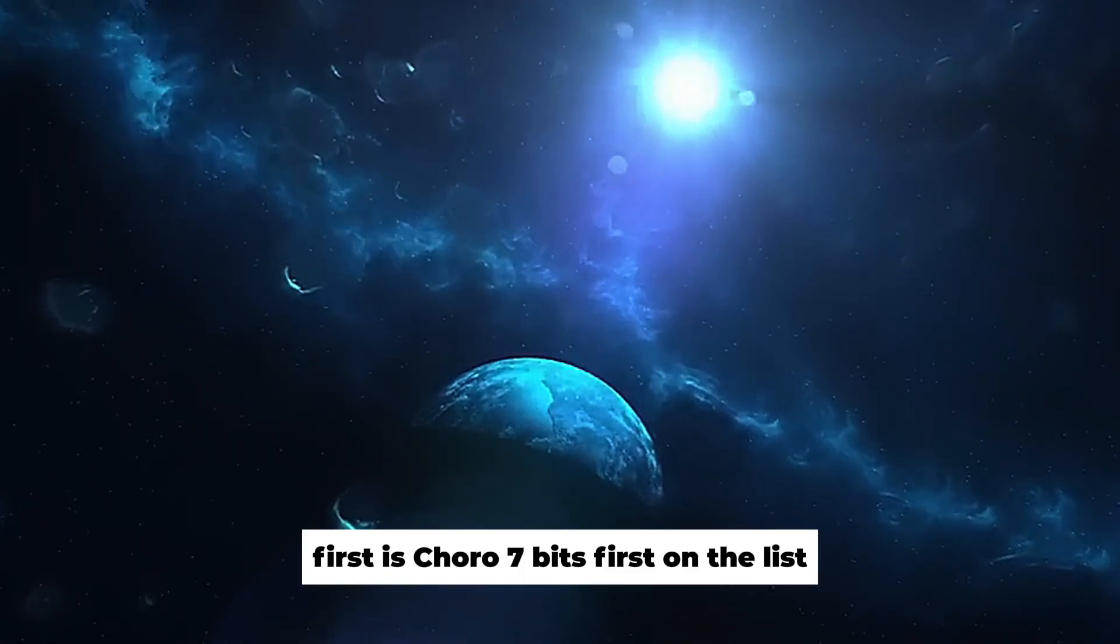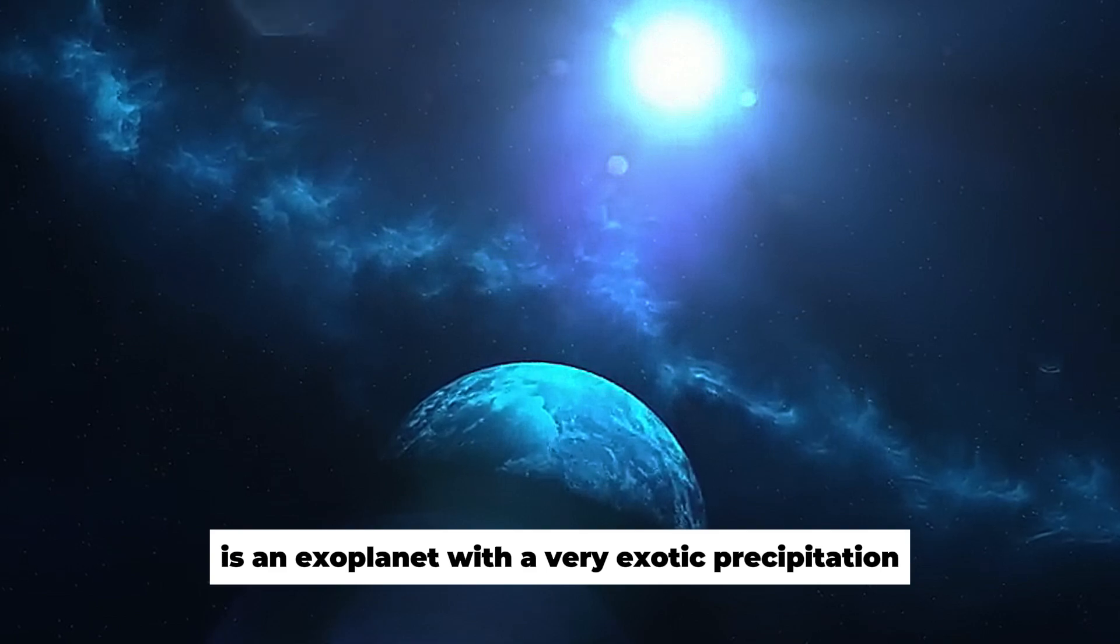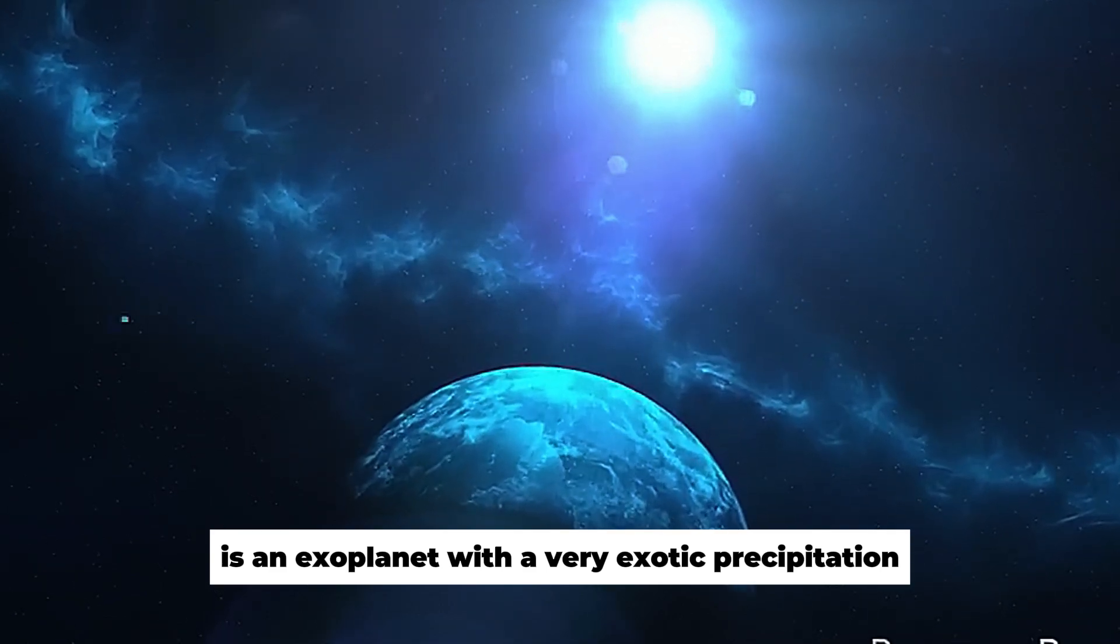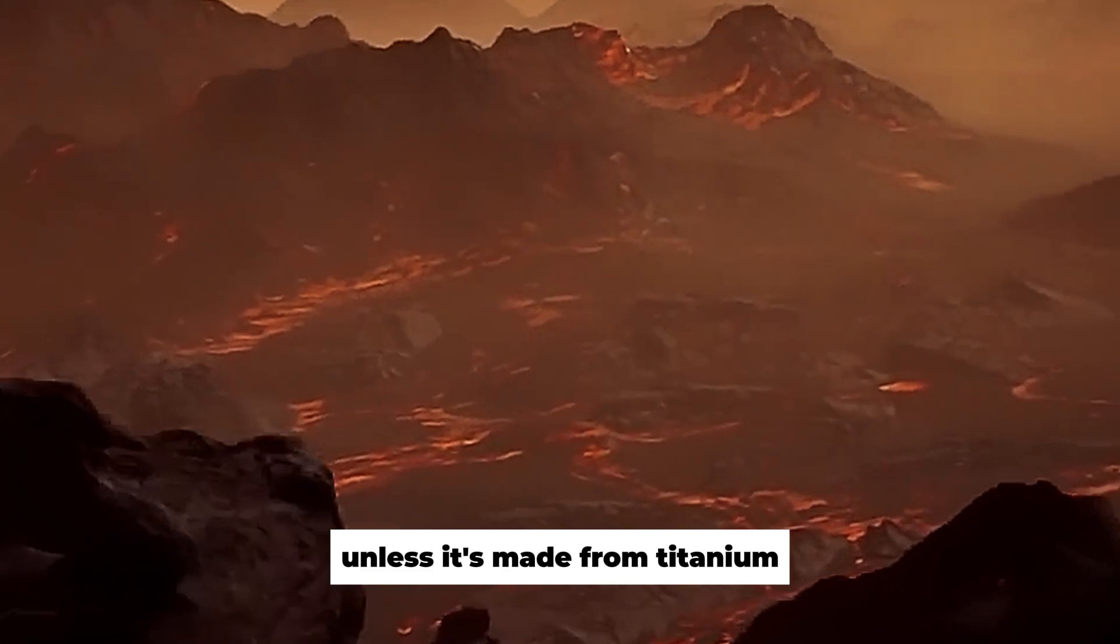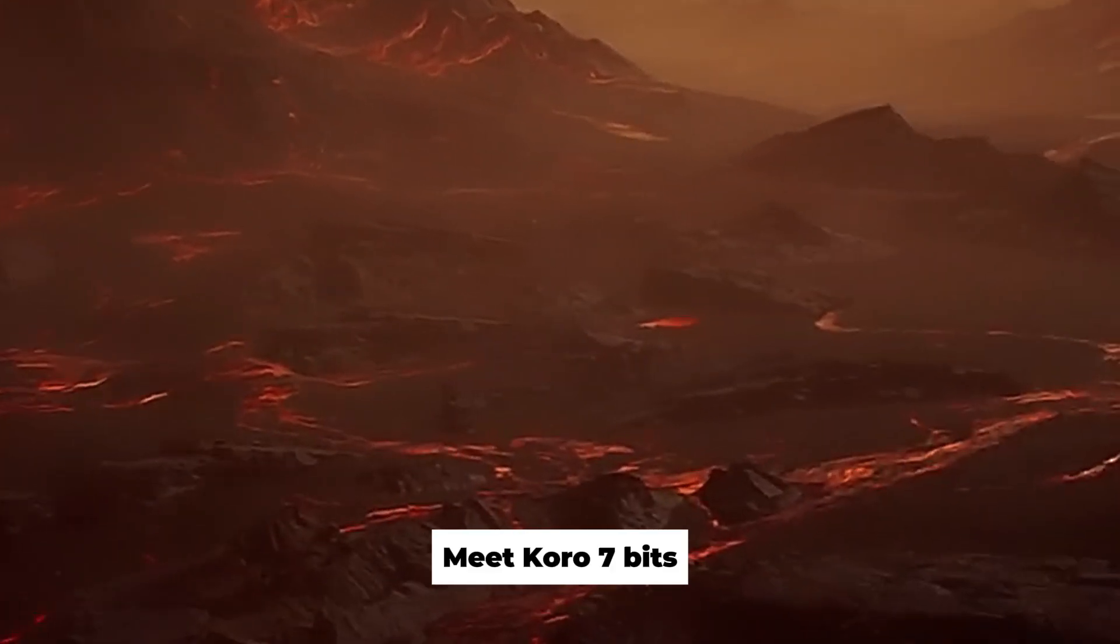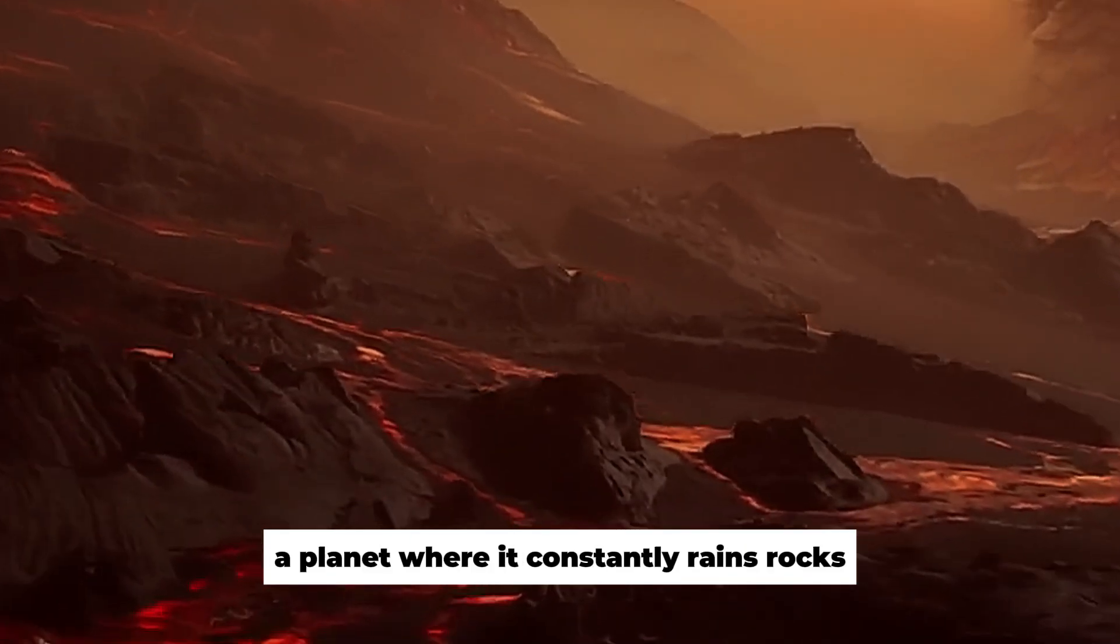First is Koro 7-B. First on the list is an exoplanet with a very exotic precipitation, and no umbrella will help you unless it's made from titanium. Meet Koro 7-B, a planet where it constantly rains rocks.